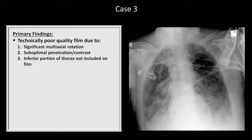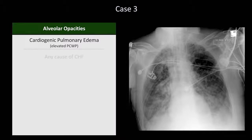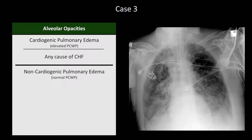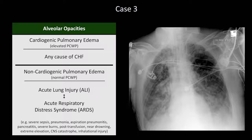Moving on to the actual findings, there are obvious diffuse bilateral patchy alveolar opacities with probable bilateral effusions. The etiologies of diffuse alveolar opacities can be divided into two categories. First, there is cardiogenic pulmonary edema, which is associated with an elevated pulmonary capillary wedge pressure, which is a surrogate for left atrial pressure. Any cause of CHF can lead to cardiogenic edema. The other category is non-cardiogenic pulmonary edema, which has a normal wedge pressure. Diffuse non-cardiogenic edema is often placed into the spectrum between acute lung injury and acute respiratory distress syndrome, or ARDS. The distinction between ALI and ARDS is simply based on how hypoxemic the patient is. There are many etiologies of non-cardiogenic edema, most notably severe sepsis, pneumonia, and aspiration pneumonitis.